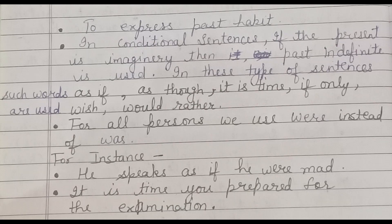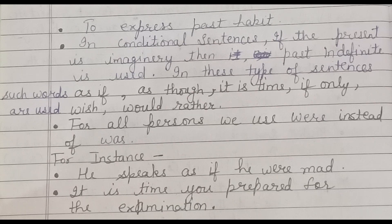In these types of sentences, such words are used — for example: as if, as though, it is time, if only, wish, would rather. For all persons, we use 'were' instead of 'was' — hum sabhi persons ke liye 'were' ka use karenge, was ki jagah, chahe koi bhi person ho, agar is tarah ke conditional sentences aate hain.